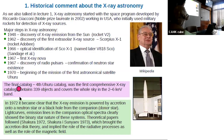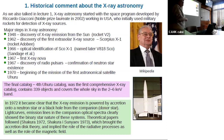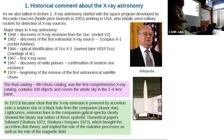Shortly after the launch of Uhuru, it became quite clear that x-ray emission is powered by accretion onto a neutron star or a black hole, and sources are basically of binary nature. Theoretical papers by Shakura (1972) and Shakura & Sunyaev (1973) followed soon after, establishing the field of accretion disk theory.